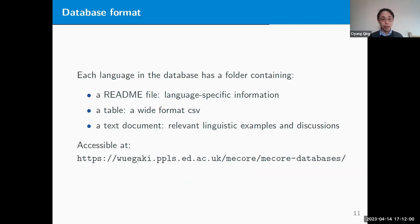The result of this data collection is this database, where each language has a folder containing three things: a README file with language-specific information such as the list of semantic and combinatorial properties or some language-specific distinctions like mood or complementizer types; a table which is a wide format CSV; and a text document containing relevant linguistic examples and discussions. The database can be accessed from the link below.